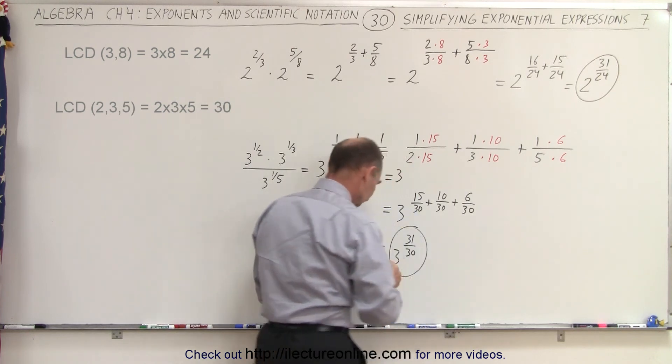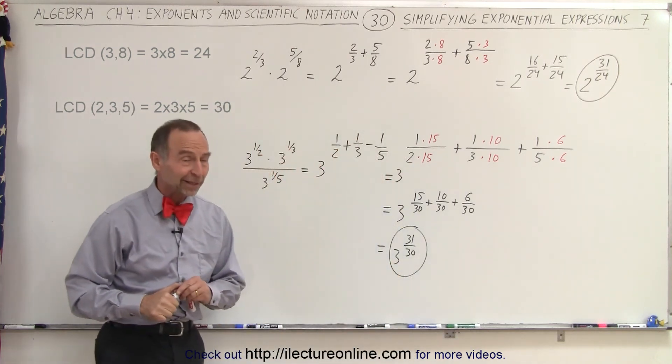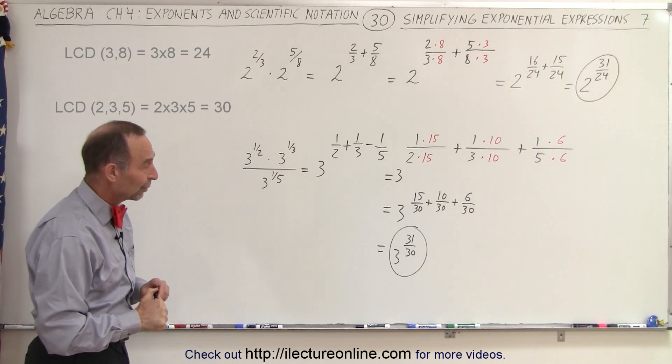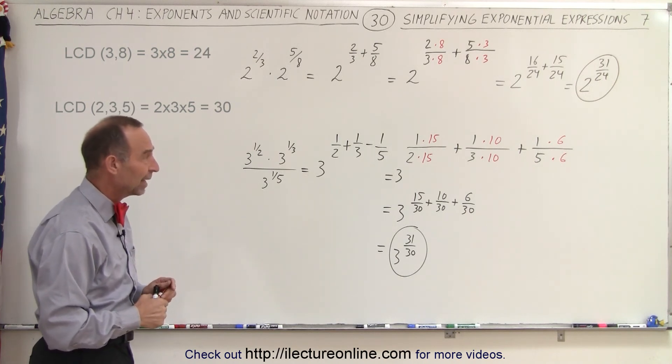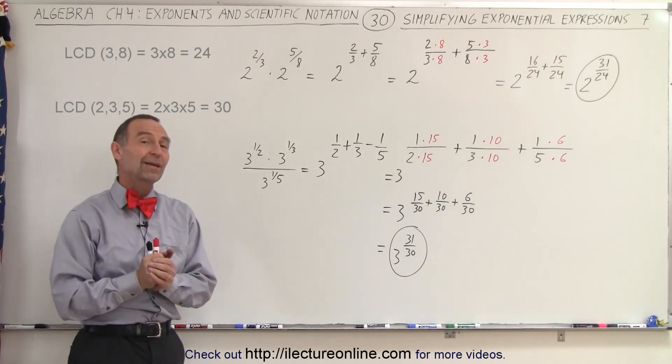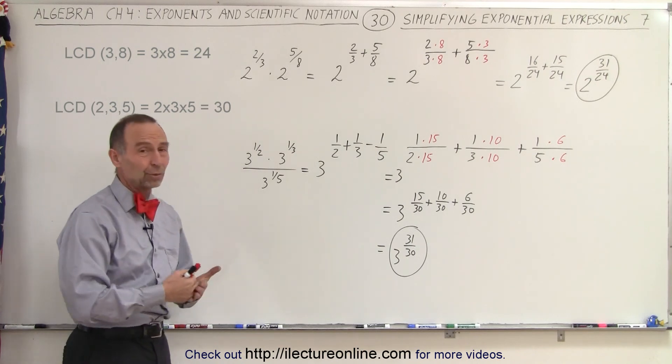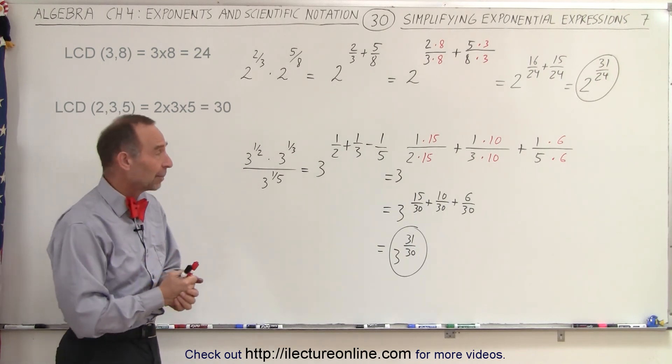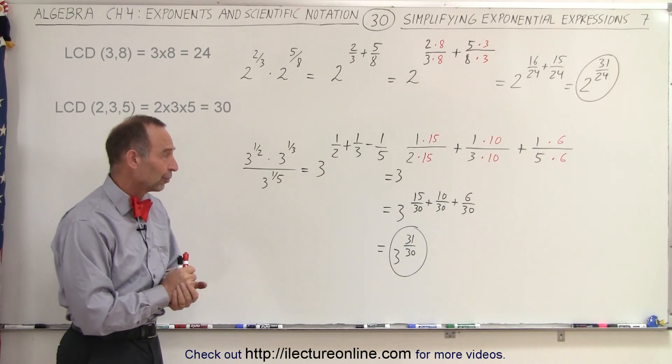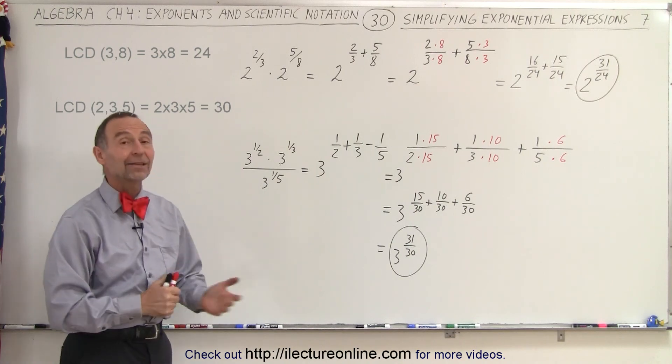You may not like the result, but that's the simplest way in which we can write that particular expression. Again, when the denominators are not the same, we must add them just like we do any fraction - find the lowest common denominator, and then add those results. And that is how it's done.